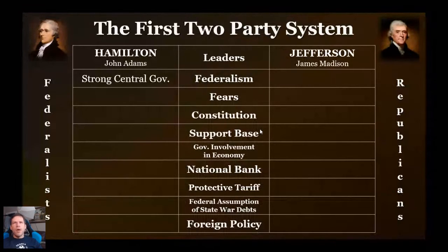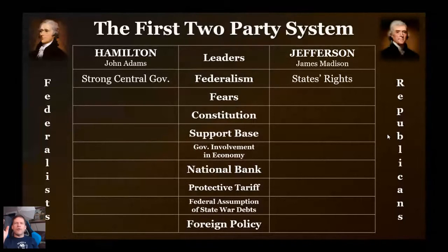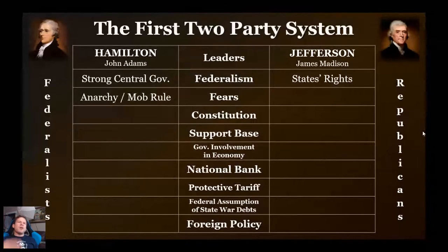Hamilton wants a strong central government, whereas the Jeffersonian Republicans are fans of states' rights. That is the biggest distinction: strong central government versus states' rights and a very limited federal government. Jefferson really saw the Constitution as the Articles on steroids. As for fears — a lot of things are driven by fear, especially in politics. Hamilton, Adams, and the Federalists feared anarchy and mob rule, whereas the Jeffersonians feared tyranny. Both are legitimate fears — you don't want anarchy, but you also don't want a government so powerful it runs on its own.